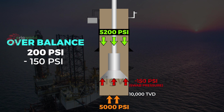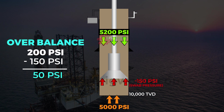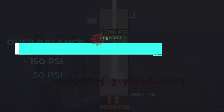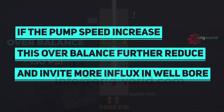Because of the swab pressure created by the upward movement of the string, the overbalance remaining is only 50 psi. During pullout, the wellbore has only 50 psi overbalance, and if the pulling speed is increased, this overbalance will further reduce and might invite more influx.